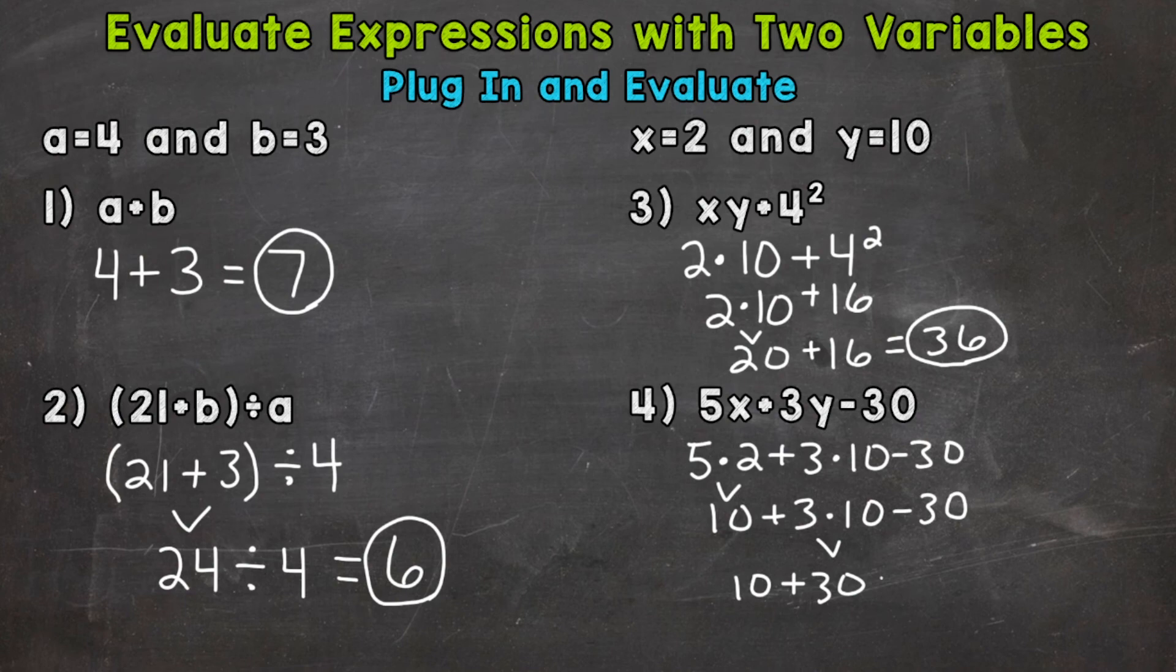Bring down everything else in the same exact order. And now we have addition and subtraction. Addition and subtraction are in the same level of the order of operations, so we can work our way from left to right. Let's do addition. 10 plus 30 is going to give us 40. Bring down our subtraction and the 30, and that's where we will end. 40 minus 30, which gives us 10.